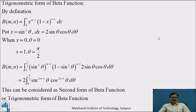Now we will see the trigonometric form of Beta Function. Already we have discussed about the Beta Function in Part 1. By definition, Beta of (m, n) is equal to integration from 0 to 1 of x raised to (m-1) into (1-x) raised to (n-1) dx.